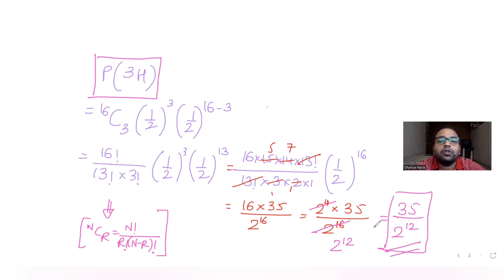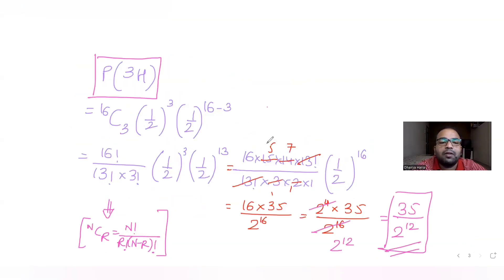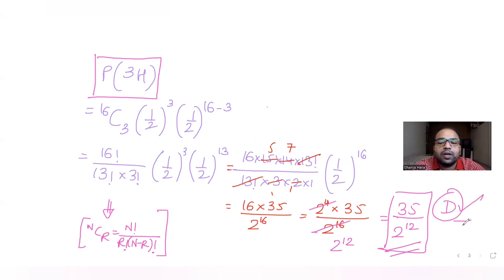I hope you have understood how to solve this type of question involving binomial distribution. First, we equated the two probabilities to find that the total number of tosses n = 16. Then using the binomial formula we found the probability of 3 heads to be 35 / 2^12. Checking the options, the correct answer is option D.